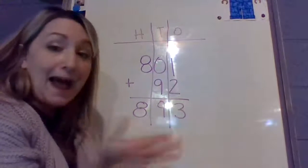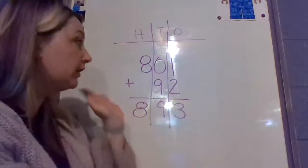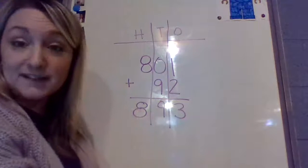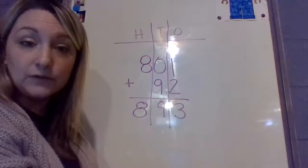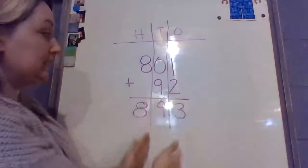Did I have to regroup at all in that problem? Nope. I didn't carry anything over. There were only 1's in the 1's place, 10's in the 10's place, 100's in the 100's place, and I did not have to add up any more. So that was a pretty easy problem as long as I kept everything neat and organized.